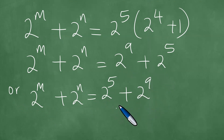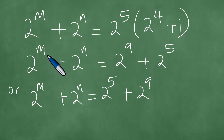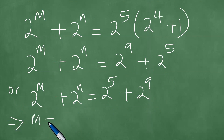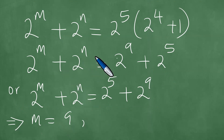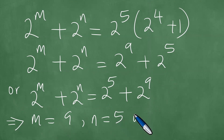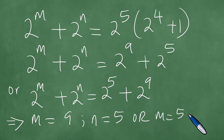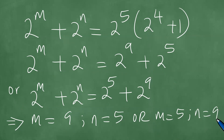We can commute the addition here. By comparison, we can see that M is 9 and N is 5. Or, in the second case, M is 5 and N is 9.